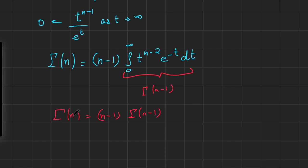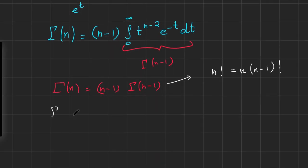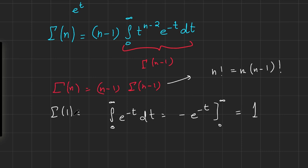The mathematicians researching this noticed that this is quite analogous to n factorial's functional equation: n factorial equals n times n minus 1 factorial. Perhaps they're related. Let's investigate gamma of 1 — that's the integral from 0 to infinity of t to the 0, e to the minus t dt, which is just 1. So gamma of 1 equals 1.